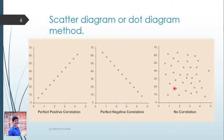If the points are spread all over without any specific direction — neither upward nor downward — it is called Non-Correlation or No Correlation. To repeat: if the diagram is upward sloping straight line, it is Perfect Positive Correlation; if it is downward sloping straight line, it is Perfect Negative Correlation; and if the points are scattered without direction, it is Non-Correlation.